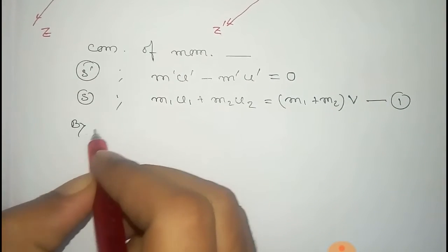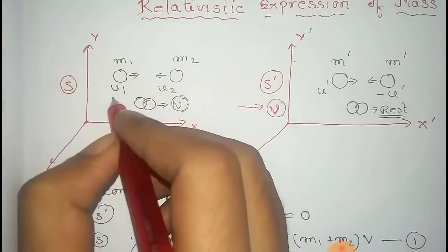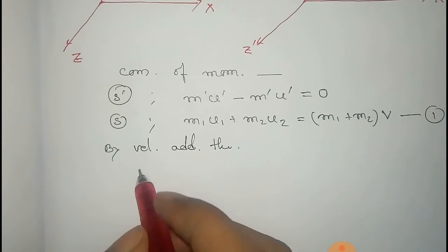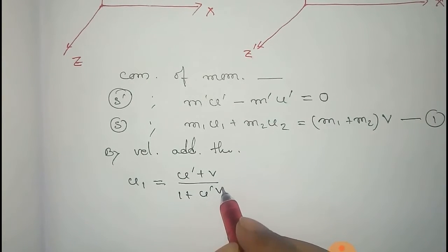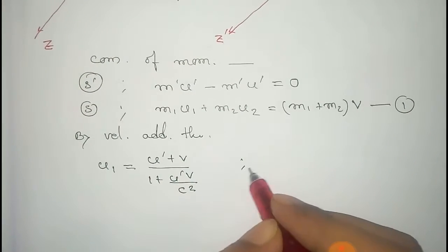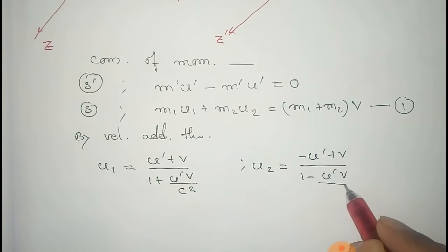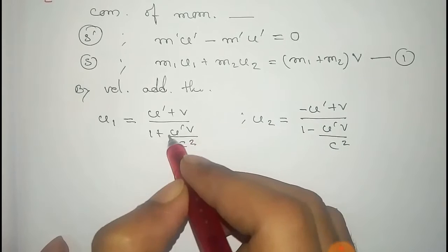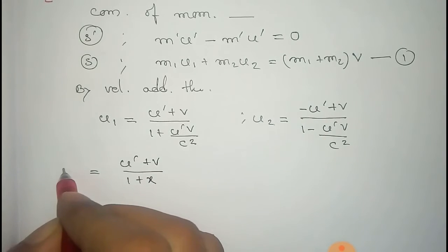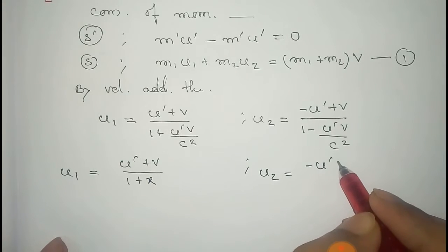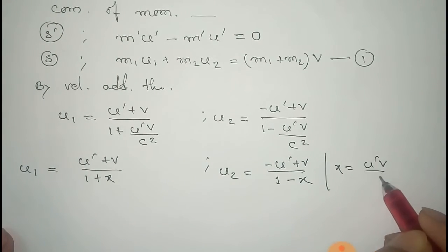From the velocity addition theorem of Einstein, we get the values of u1 and u2 for the S frame. That is: u1 equals (u prime plus v) divided by (1 plus u prime·v/c²), and u2 equals (minus u prime plus v) divided by (1 minus u prime·v/c²). We take the term u prime·v/c² as x, so u1 equals (u prime plus v)/(1 plus x) and u2 equals (minus u prime plus v)/(1 minus x).